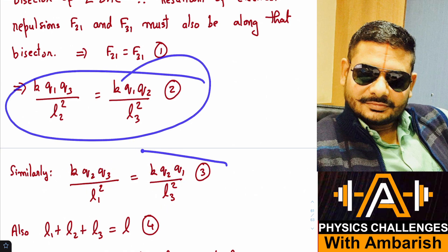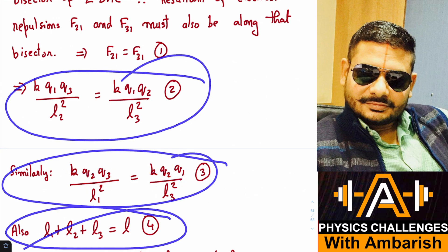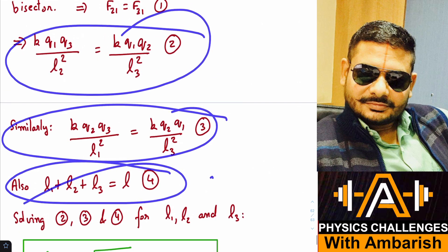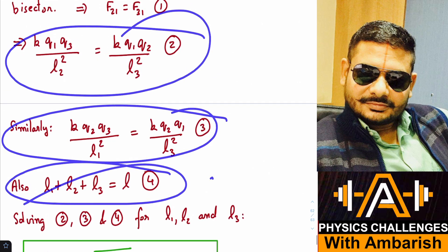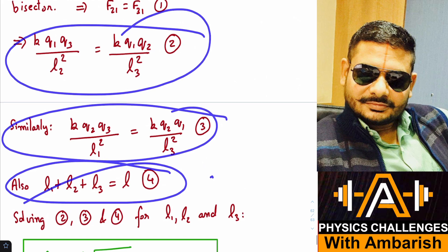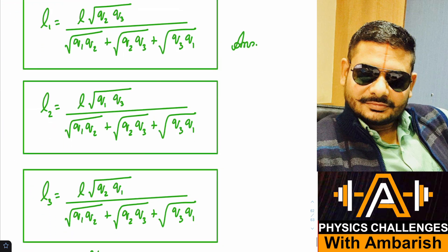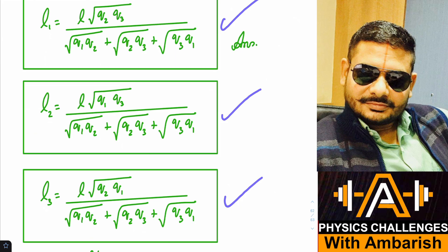So now equations 2, 3, and 4, these three equations are there which have the unknowns L1, L2, and L3. And we can just solve them readily for L1, L2, and L3. If you do that, you can get these solutions. They are very fairly easy equations to solve.